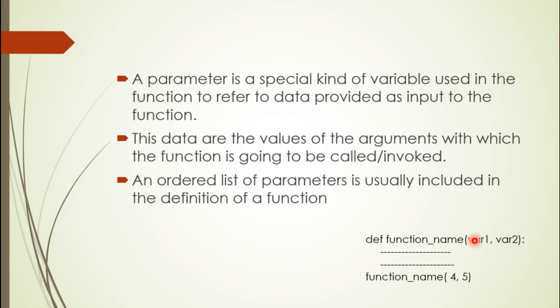These are two variables, variable one and variable two, called parameters. When we call or invoke the function, at that time whatever values we pass, in this case we pass the values four and five, these values will go into variable one and variable two.